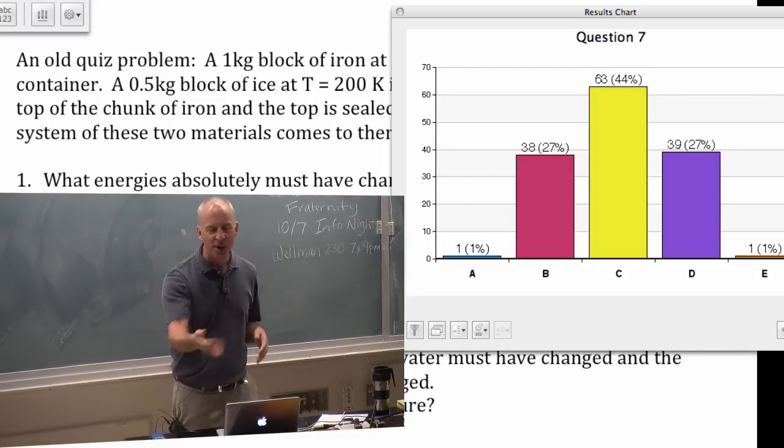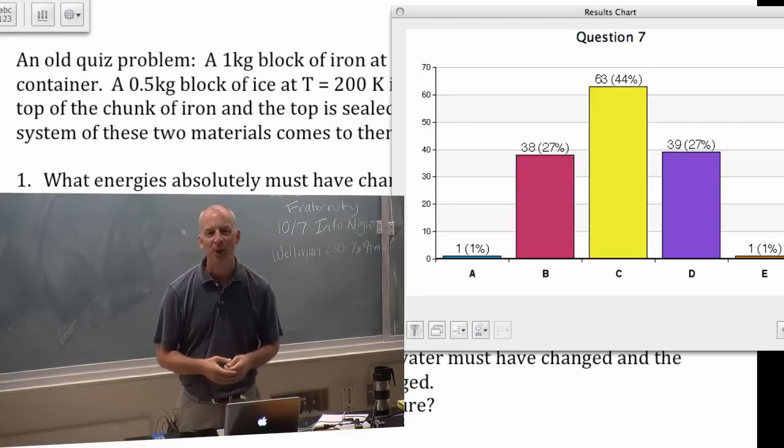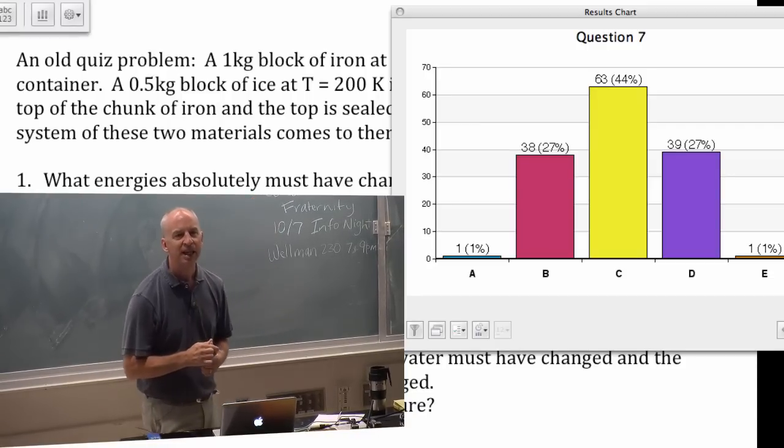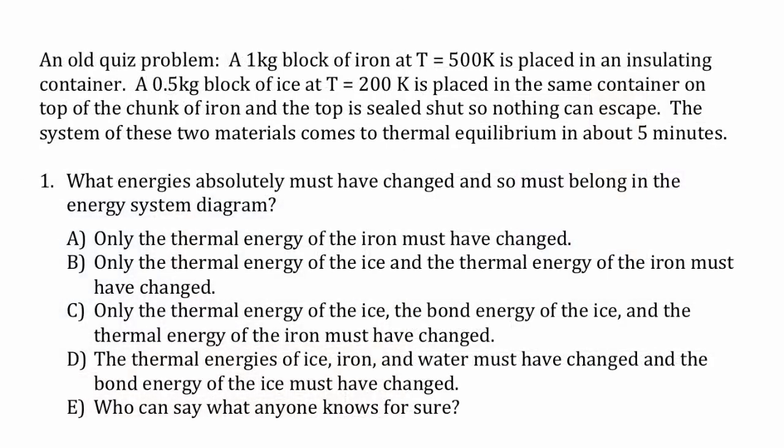So there's a funny thing. I noticed that the major part of that distribution is answers B, C, and D. There's a funny thing about B, C, and D: they agree about two energy changes. They agree that at least B is true, and then C and D add more things. So they agree that the thermal energy of the ice changes and the thermal energy of the iron changes. And I'm going to agree with you there.